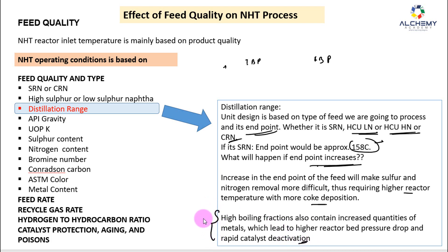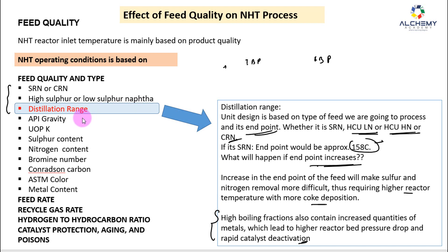This is also one of the reasons we must keep monitoring the FBP — during NHT reactor operation you have to send samples continuously and keep checking. In this video I have covered three topics: SRN vs CRN, high sulfur vs low sulfur naphtha, and distillation range.